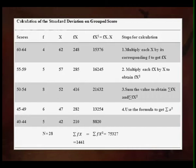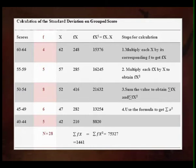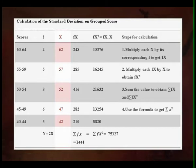In the grouped data table, the first column shows the class intervals: 60–64, 55–59, 50–54, 45–49, and 40–44. The second column shows the frequencies: 4, 5, 8, 6, and 5, giving a total n of 28. The third column shows x, which is the midpoint of each class interval: 62 for 60–64, 57 for 55–59, 52 for 50–54, and 47 for 45–49. This midpoint is called x.